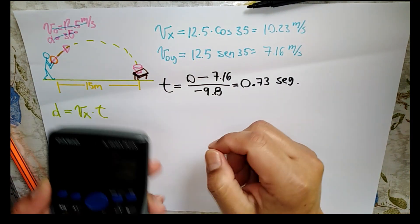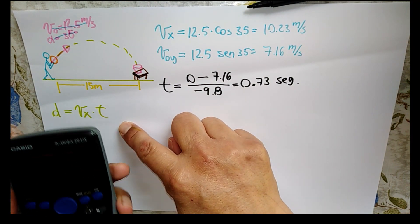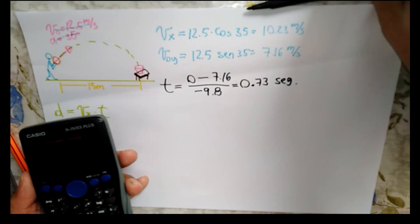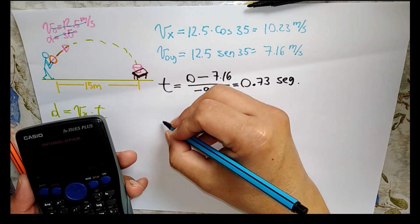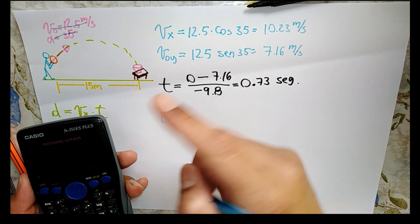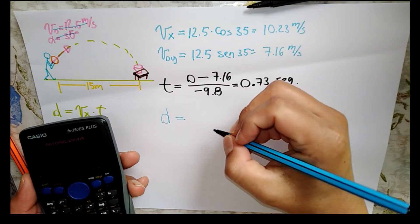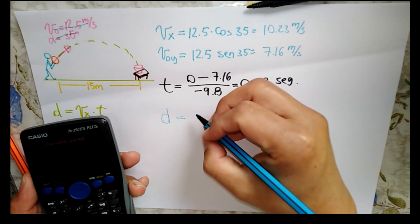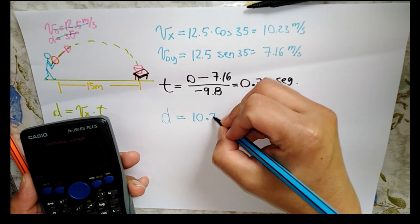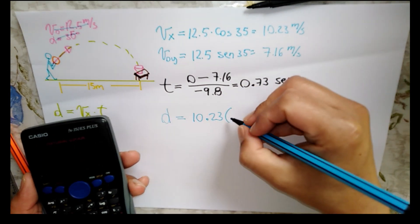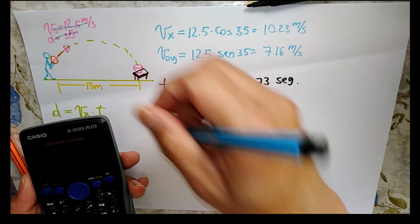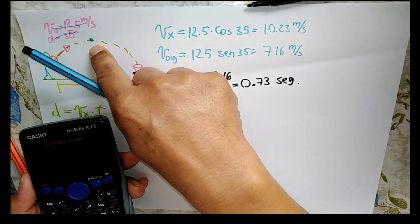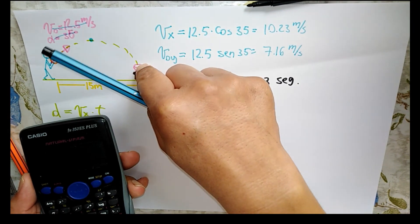Ya tenemos la velocidad en X, ya tenemos el tiempo. Ahora vamos a calcular la distancia. Entonces, para calcular esa distancia, o el alcance que tiene la pelota, vamos a multiplicar la velocidad en X, que sería 10.23 por el tiempo, que es 0... Perdón, 0.73 no es el tiempo. Ese tiempo es para alcanzar la altura máxima. Necesitamos el tiempo de vuelo.